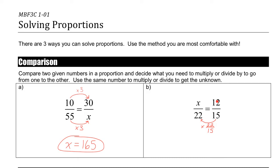And the pattern is the same on the top. So we multiply 12 by 22 over 15. And we end up with x. So you can do that in your calculator. 12 times 22 divided by 15. And you get your answer for x, which is 17.6. So that's one method is the method of comparison.